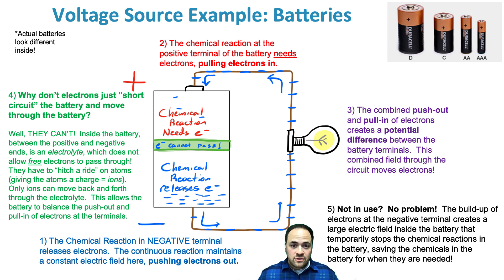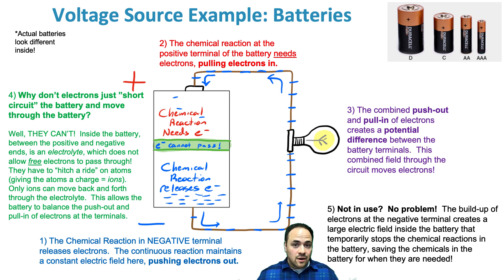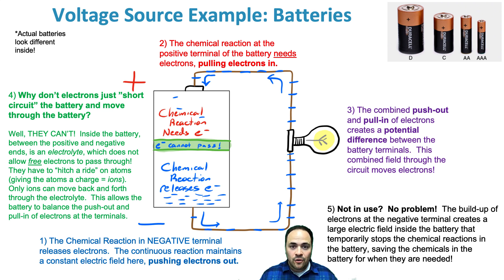Why don't electrons just take a shortcut through the battery instead of going through the circuit? They can't. Inside a battery is an electrolyte, which won't let lone electrons through. Electrons need to hitch a ride on atoms — turning them into ions — and ions are able to move through the electrolyte. The electrolyte also keeps a balance between the terminals so you don't get too much push from one end and too little pull from the other. It's a complex process — feel free to ask questions.